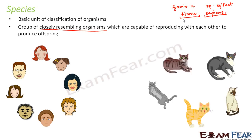Similarly, take the example of cats. There are so many different varieties of cats — some are very black, some are white, some have stripes, some are very small, some are quite big and fat. But they all belong to the same species, and that is why even though they look different, they are capable of producing offspring by reproducing amongst themselves. Cats belong to the species called Felis catus, which represents the specific epithet of cats.